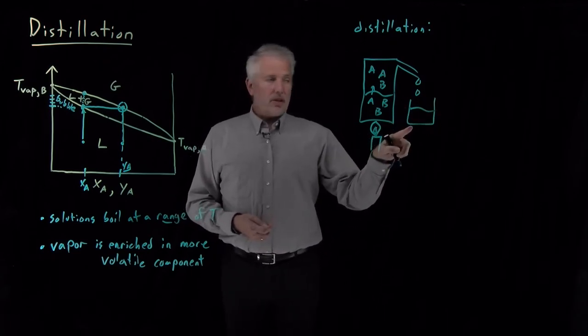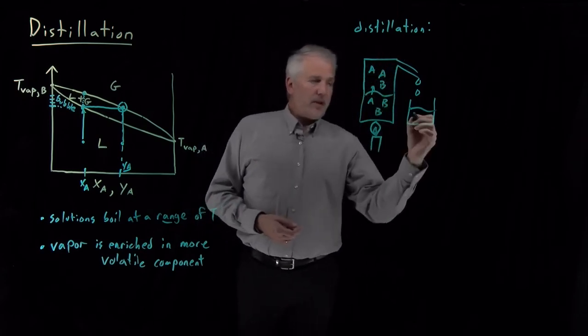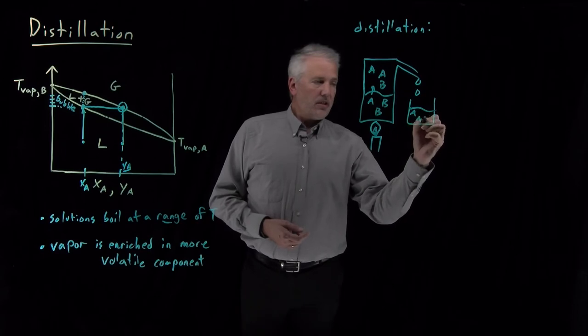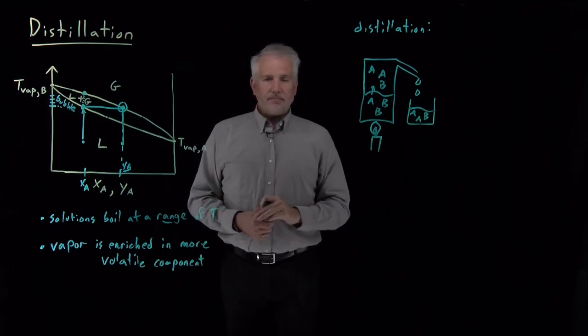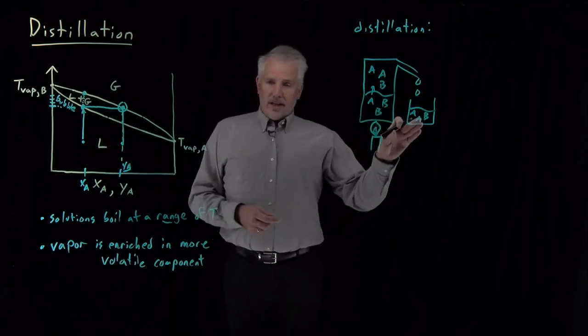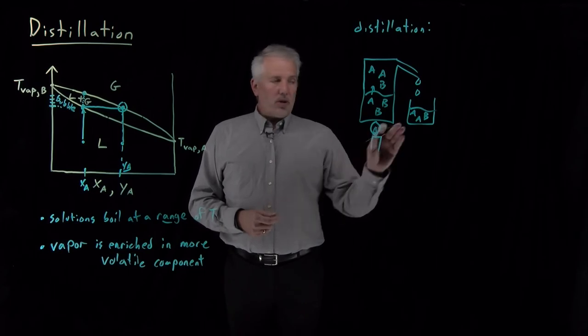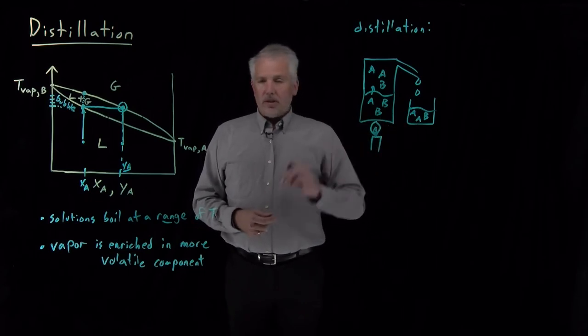into this beaker over here. This is the distillate, the liquid that results from this distillation, and the composition of this vapor will match the composition of the distillate once I've condensed it. So I distill the liquid and what I end up with is not pure A but purified to some degree in A. The more volatile component is richer in this liquid than it was in this liquid.